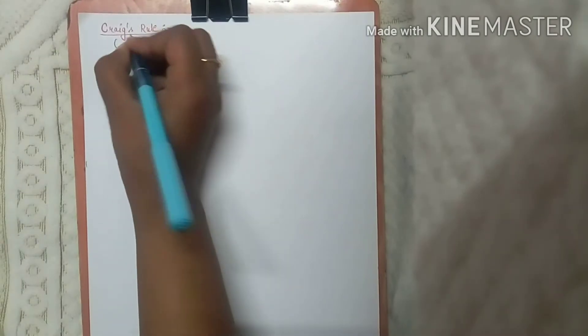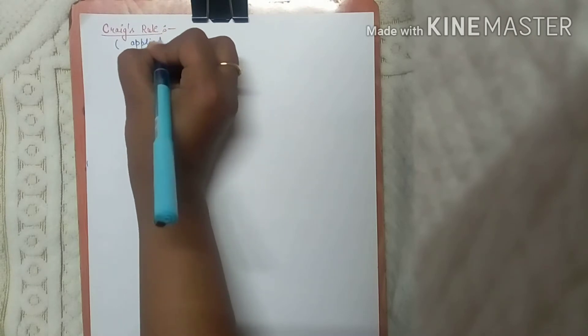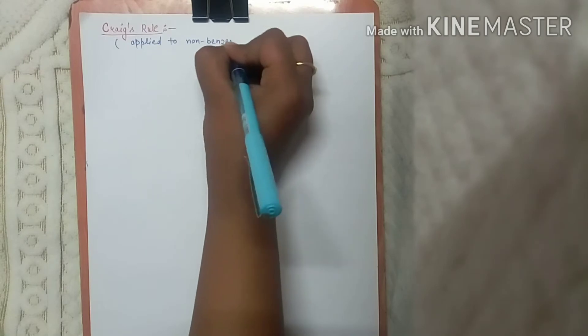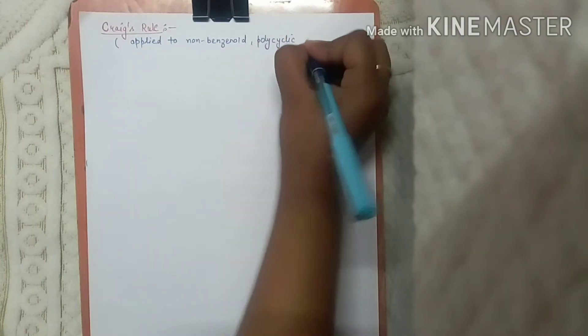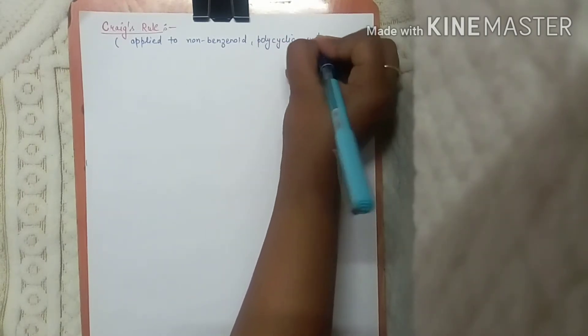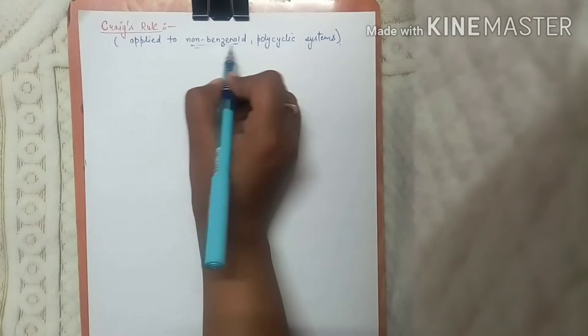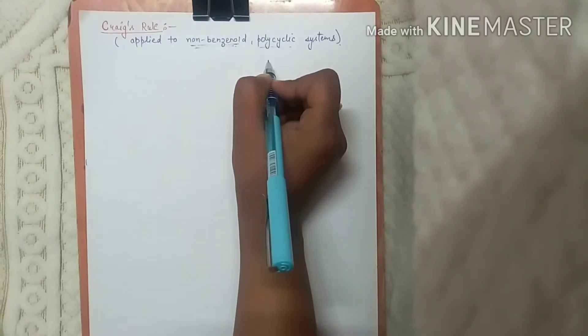Welcome to Netgate Chemistry. Today we are going to start with the topic Craig's rule. Craig's rule is applied to non-benzenoid polycyclic systems. Non-benzenoid means benzene ring should not be present, and polycyclic means more than one cyclic system in the given molecule.